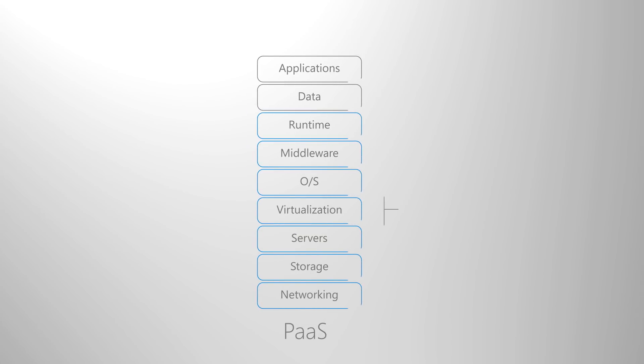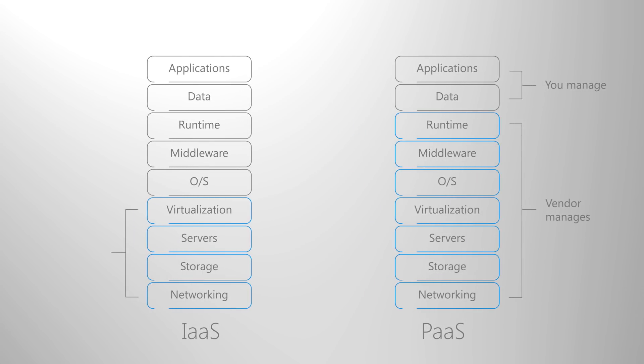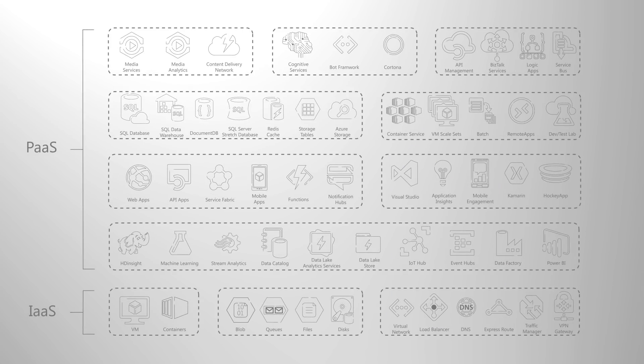With cloud computing, the first question you might have is what's the difference between IaaS and Platform as a Service, also known as PaaS. The simplest way to distinguish between the two models is by looking at what's managed by us as a cloud vendor and what's managed by you. With PaaS, we run your compute and app services and you manage your apps and data. Whereas with IaaS, we manage your compute, storage, and network infrastructure and you manage everything else. Azure offers a robust set of services that comprehensively supports both PaaS and IaaS scenarios.